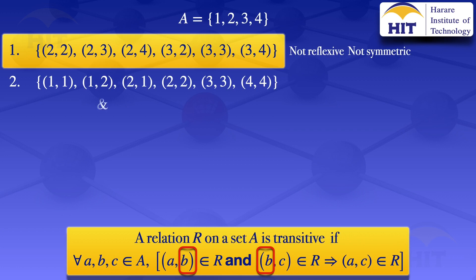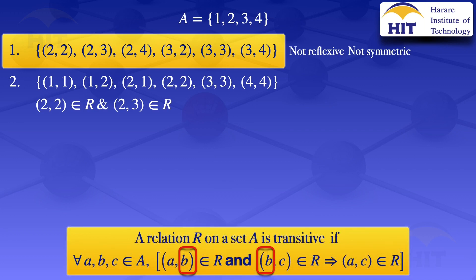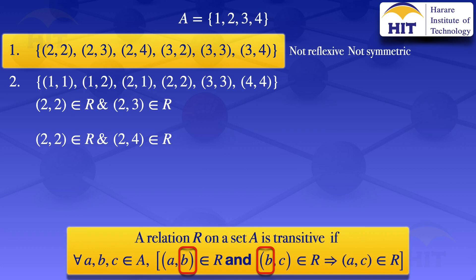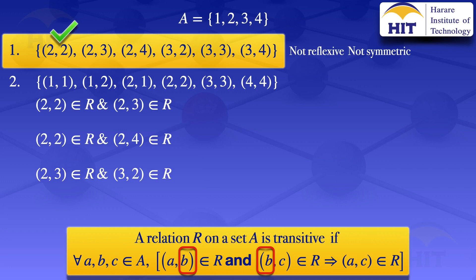We have (2,2) and (2,3): the common element is 2, so we check if (2,3) is in — it is, so that's okay. Next, (2,2) and (2,4): we check if (2,4) is in — it is, okay. Next, (2,3) and (3,2): the A,C would be (2,2) — it's there, okay. Next, (2,3) and (3,3): we check if (2,3) is in — it is, okay.